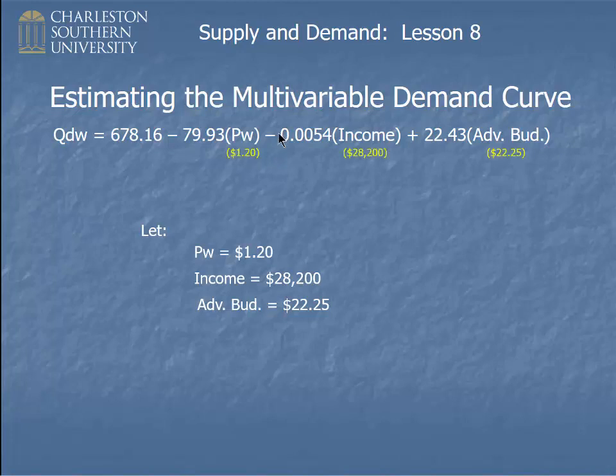Given those values, and notice I'm just going to plug them in up here. I'm going to use my calculator. So given those values, I can work through this equation, and I can figure what predicted QDW is. The regression equation predicts, using these values, that sales of widgets should be 929 units. The regression equation predicts this.